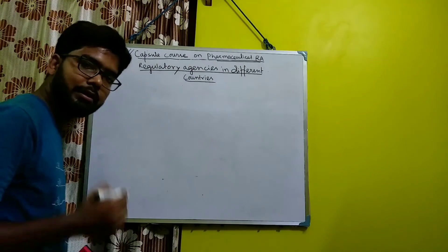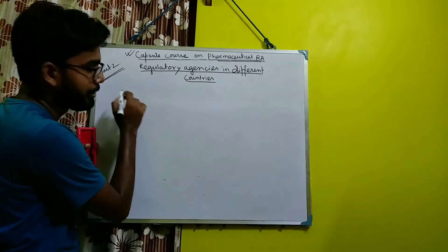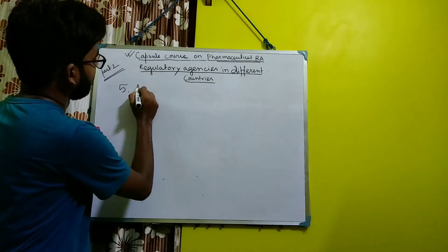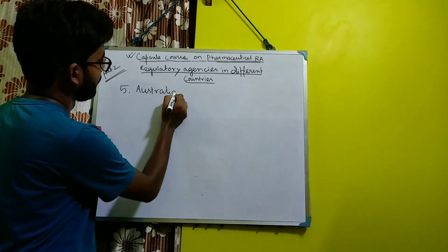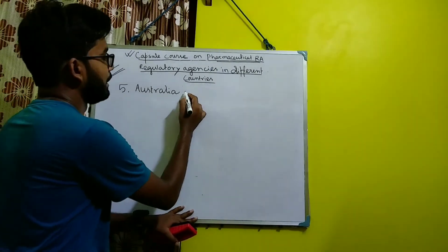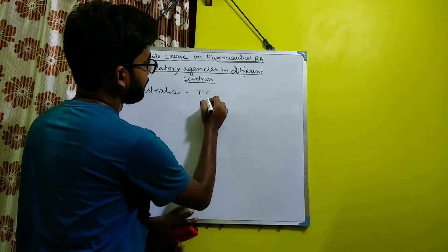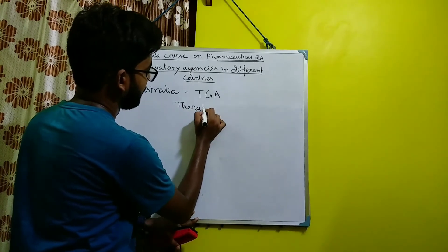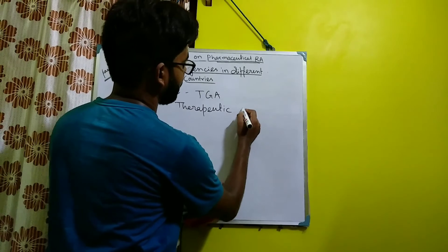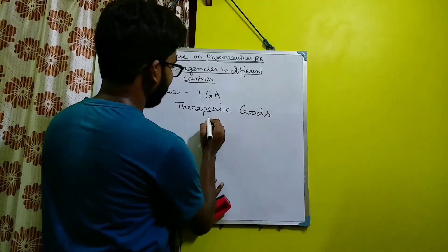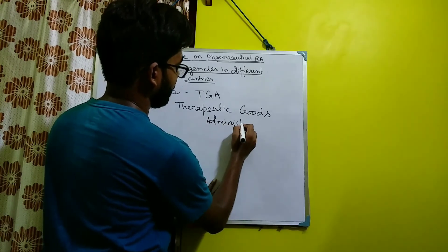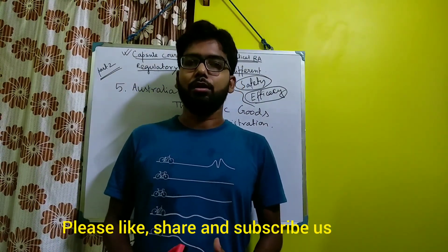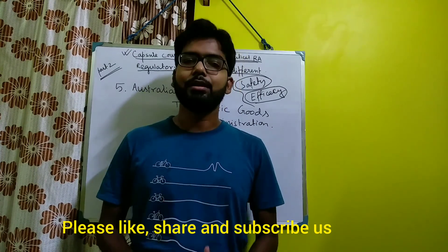Then coming to the last important regulatory agency, which is coming under Australia. The name of the regulatory agency is TGA, and the full form of TGA is Therapeutic Goods Administration. So this is the end of our video. Hope you have learned well — please like the video, share, and subscribe us. Thank you.